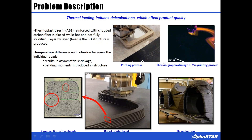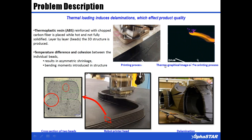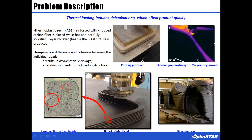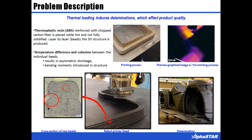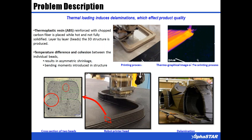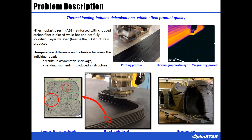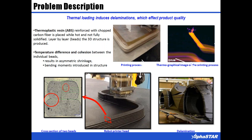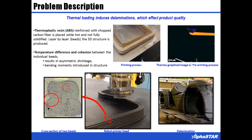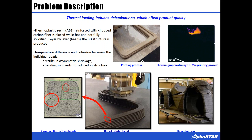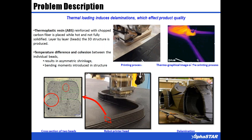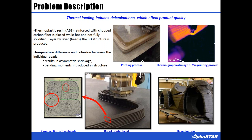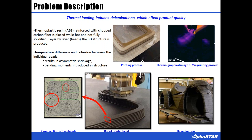The problem we are going to examine is the simulation of the additive manufacture of an automobile. This problem had unique issues related to the production process and thermal effects during material deposition. Thermographic images of the production process are presented on the top right of the screen. The bright color clearly indicates a temperature gradient, which is the source of all problems and is intimately tied to the manufacturing process.